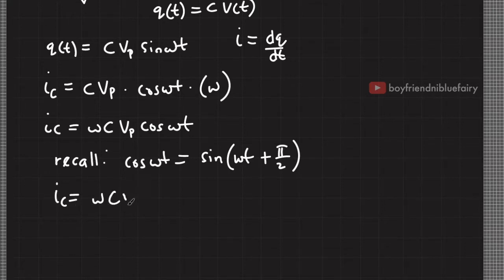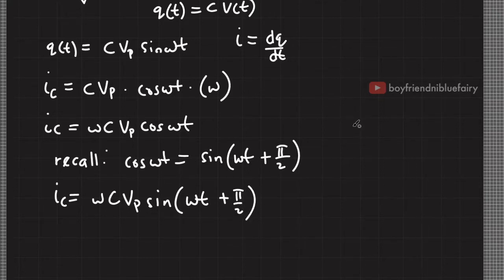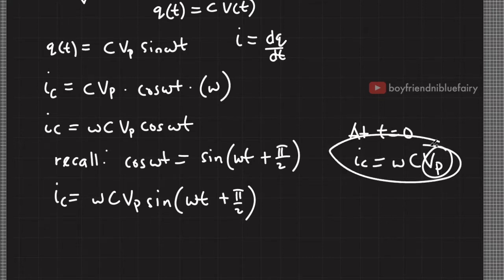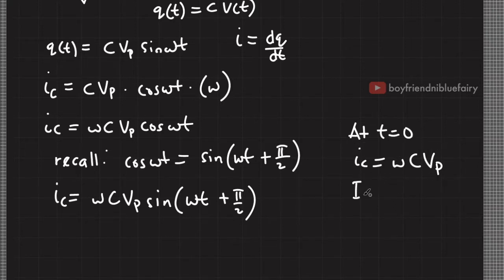The current becomes I sub C equals ωC V sub P times sine(ωt + π/2). At time t equals 0, this becomes cosine(0) which equals 1. Therefore at t equals 0, the current across the capacitor is equal to ωC V sub P, and since V sub P is the maximum voltage from the AC source, this is also the maximum current the capacitor can have — hence we can represent this as the peak current of the capacitor.